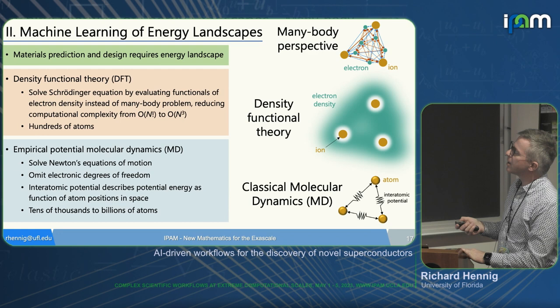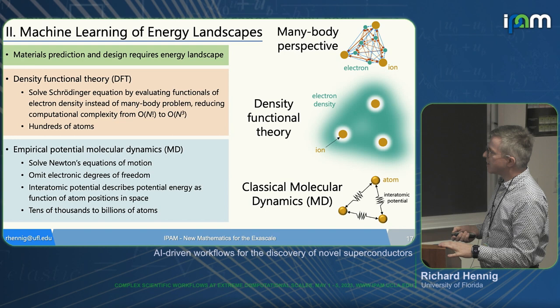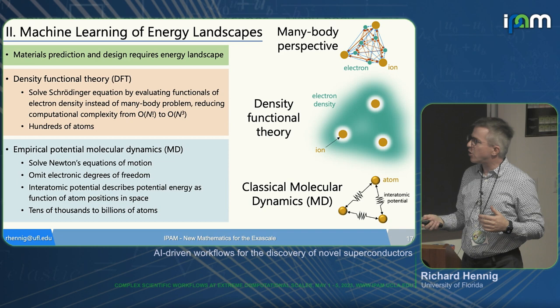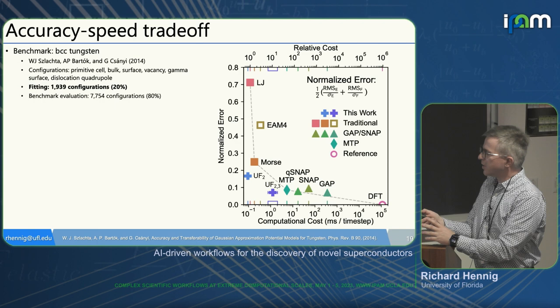We start with many-body theory, go to DFT, and then can map it onto classical molecular dynamics using some interatomic potential. We want to do that with machine learning because it can be much more accurate than empirical potentials. There's always an accuracy-speed trade-off, and I want to show you where our specific type of machine learning potential sits.